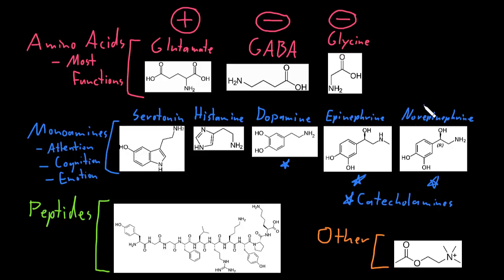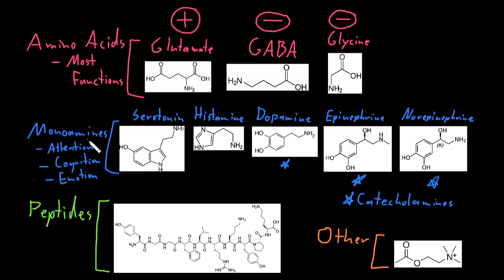Norepinephrine is also released by some autonomic neurons in the peripheral nervous system. Many disorders of the nervous system involve abnormalities of these monoamine neurotransmitter systems, and many drugs that people commonly take affect the monoamine neurotransmitters.